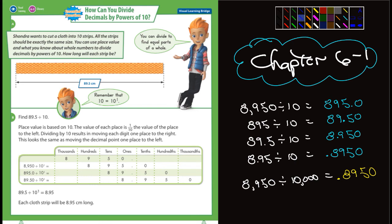So let's look at the first example they give us here. Chandra wants to cut a cloth into 10 strips. All the strips should be exactly the same size. How long will each strip be? It looks like one strip is 89.5 centimeters. So now they have a chart down below here. It says the place value is based on 10. The value of each place is one-tenth the value of the place to the left. Dividing by 10 results in moving the digit one place.